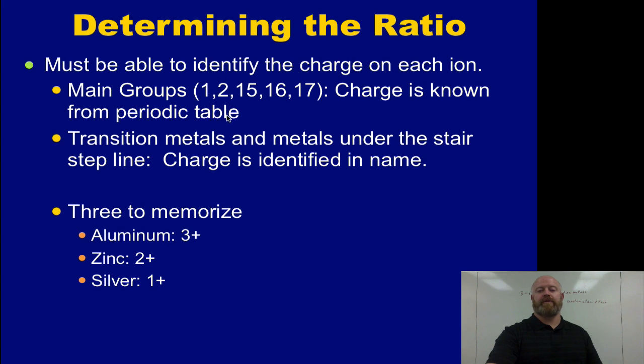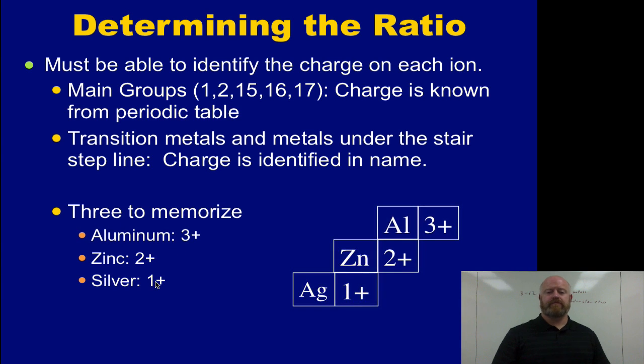Identify the charge on your anions and your cations. Groups 1 and 2 would be metals. Groups 15, 16, 17 would be non-metals. And then there are three that we had to memorize: Aluminum, zinc, and silver. Zinc and silver are part of our transition metals. Aluminum is that one under the stair-step line. We should remember that their charge for aluminum is always a 3+, zinc is always a 2+, and silver is always a 1+. If we remember that, we can use that in our naming system.